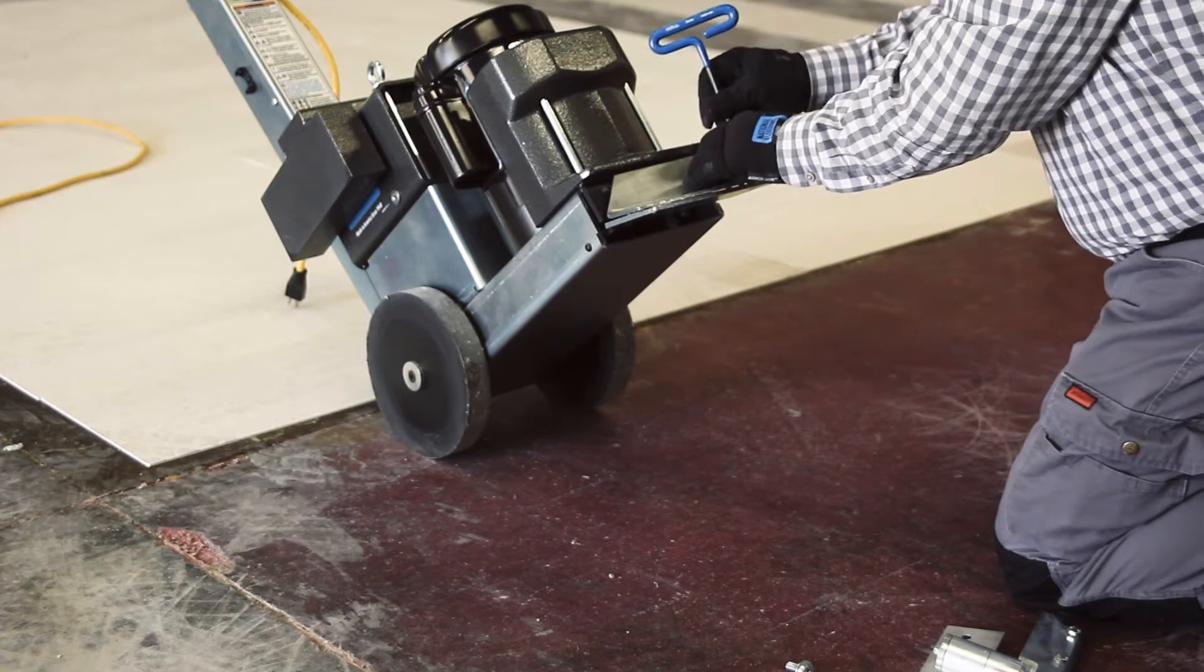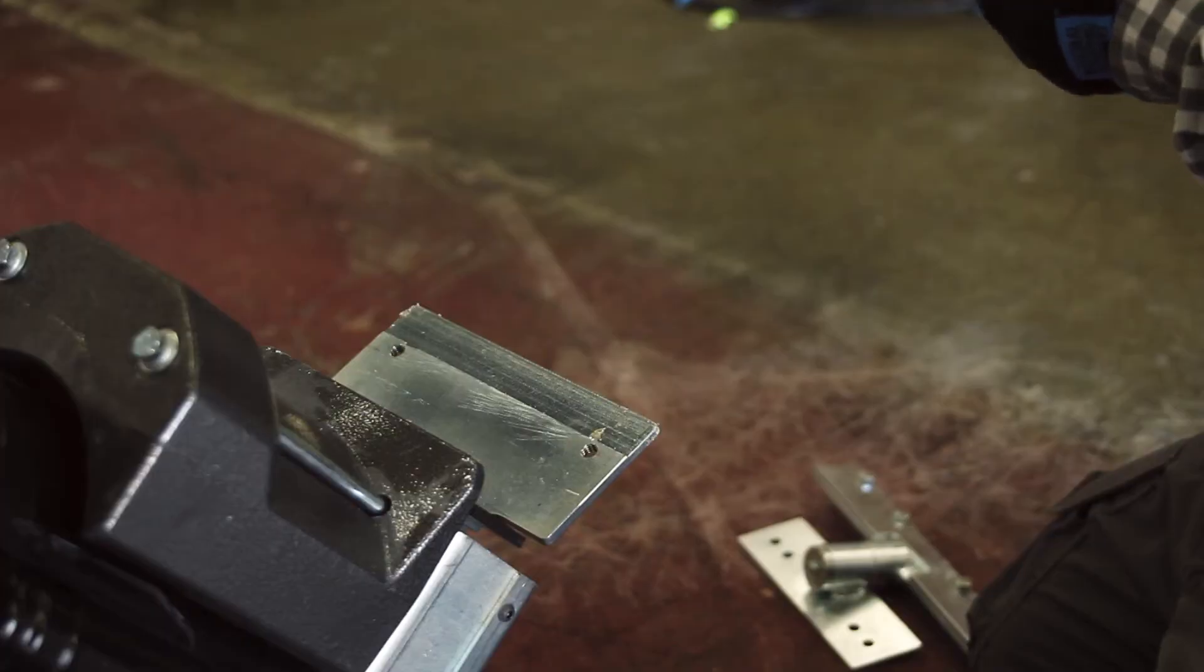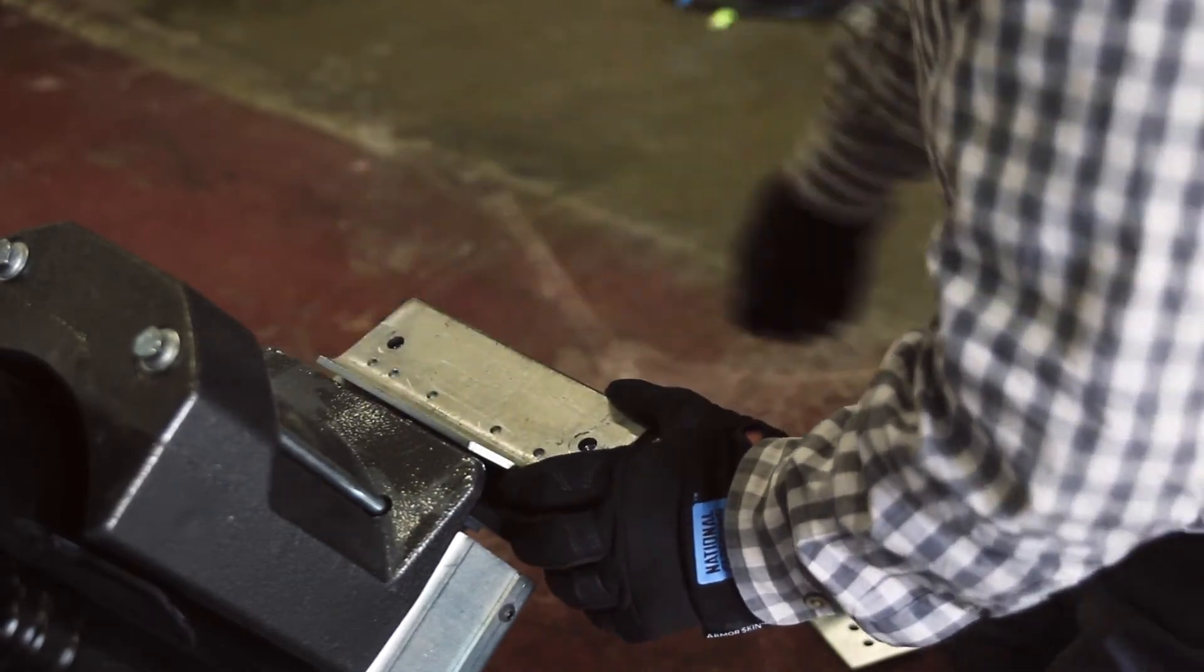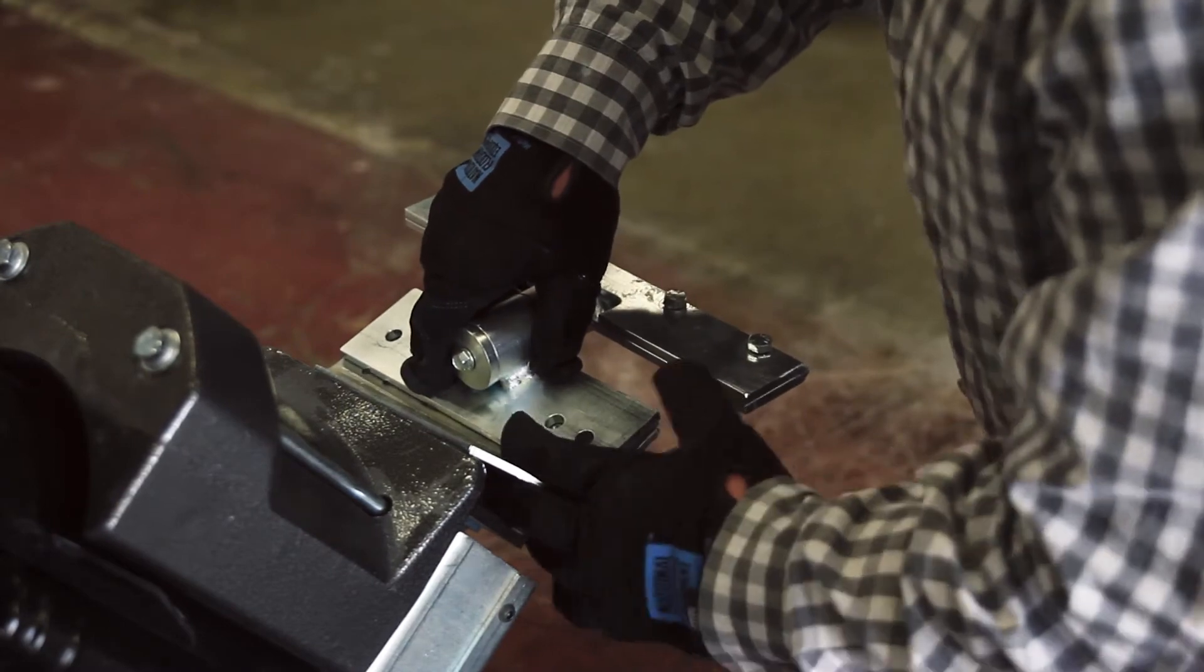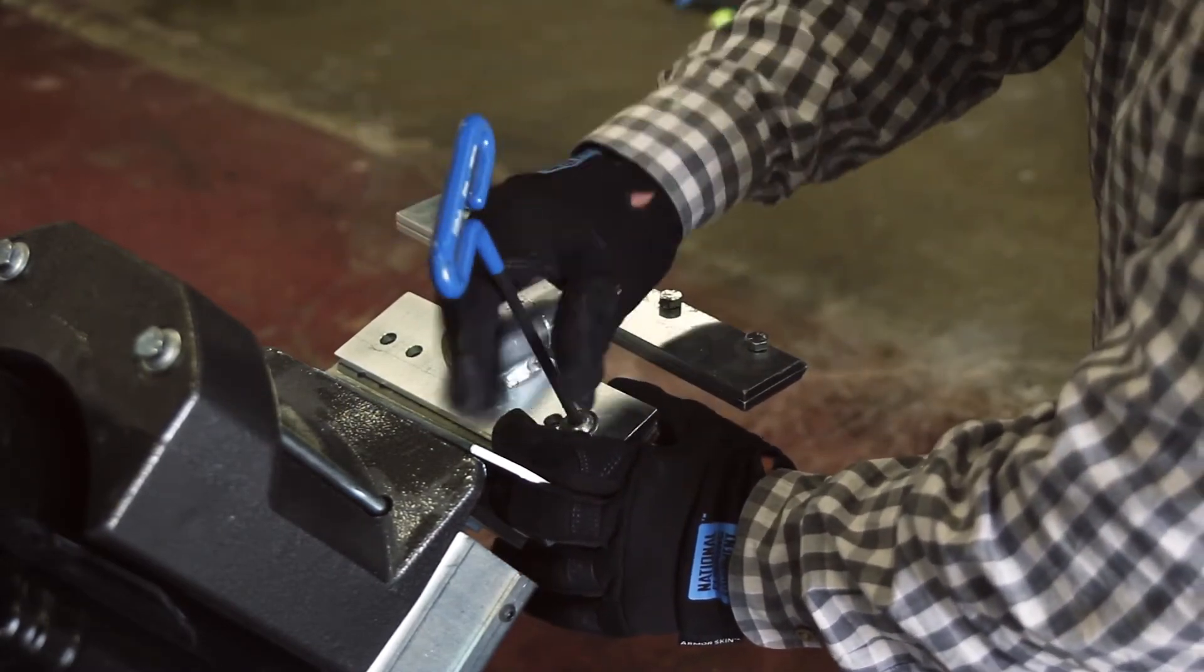Start by tipping the machine back and removing any existing blade. Attach the swivel head attachment using the existing hardware.